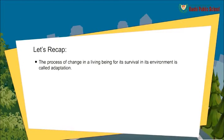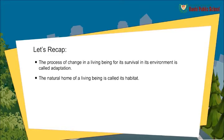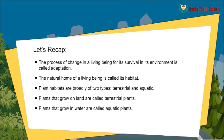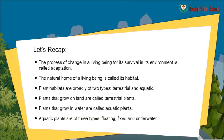Let's recap. The process of change in a living being for its survival in its environment is called adaptation. The natural home of a living being is called its habitat. Plant habitats are broadly of two types: terrestrial and aquatic. Plants that grow on land are called terrestrial plants. Plants that grow in water are called aquatic plants. Aquatic plants are of three types: floating, fixed, and underwater.